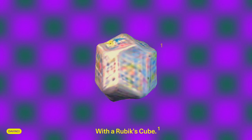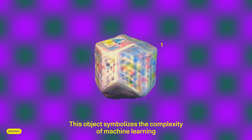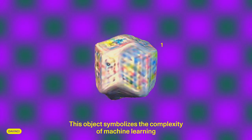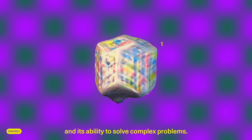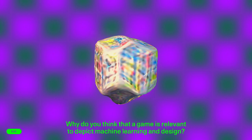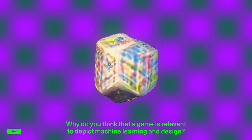With a Rubik's Cube. Why? This object symbolizes the complexity of machine learning and its ability to solve complex problems. That's a game. Why do you think that a game is relevant to depict machine learning and design?